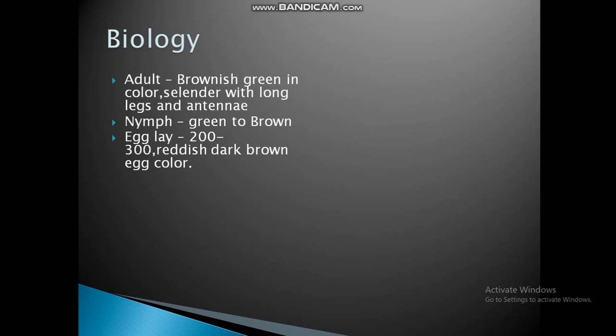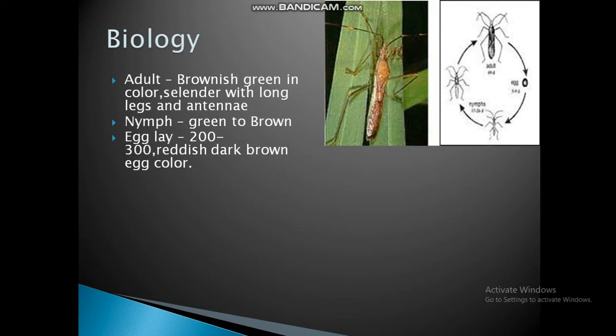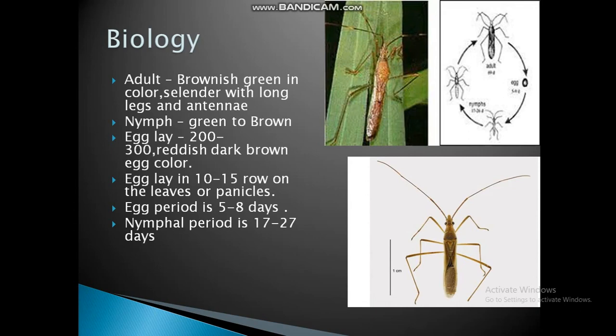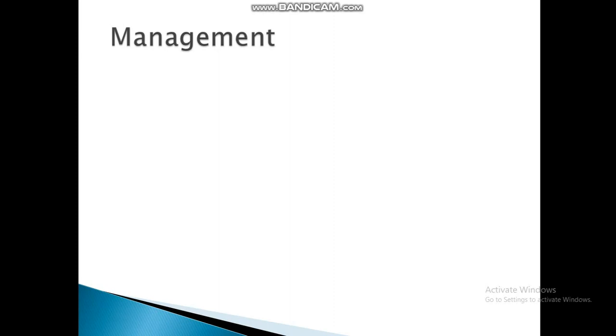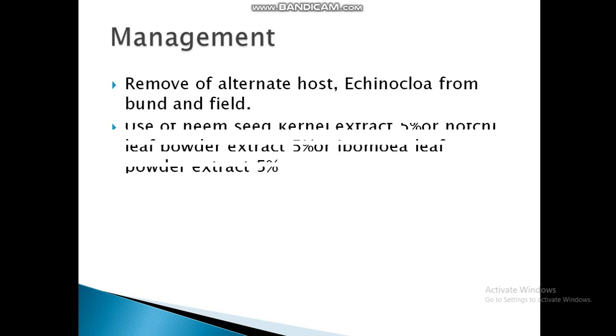Biology: the adult is brown to green in color, cylindrical with long legs and antenna, name green to brown color. Eggs, 200 to 300 in number, are dark brown in color. Adults lay eggs in 10 to 15 rows on the leaves or panicle. Egg period is 5 to 8 days, nymph period 17 to 27 days, and adults are fairly long lived at 30 to 50 days.